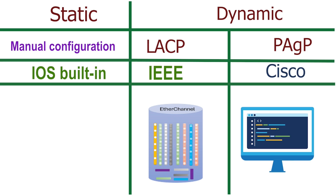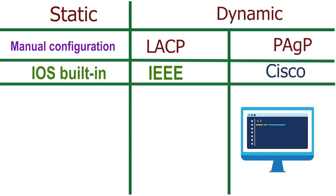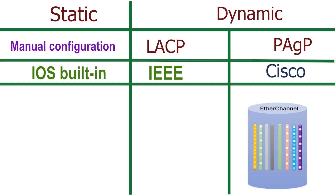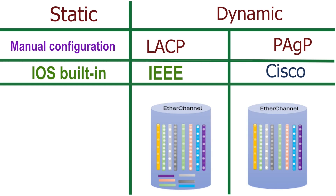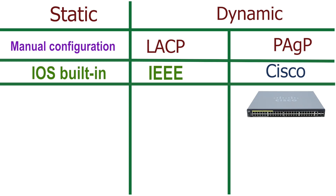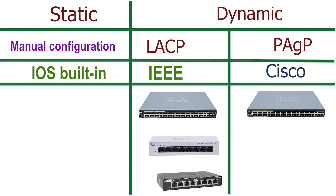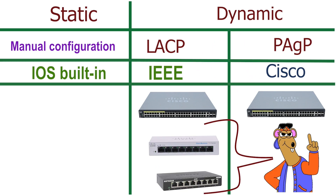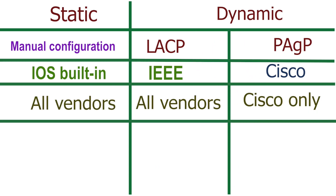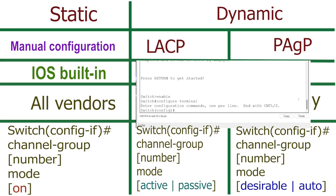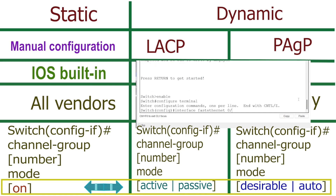Cisco developed PAGP as a proprietary protocol — it works only on Cisco switches and can combine up to 8 links. It works similarly to LACP but uses different terms for its modes. Cisco switches support both protocols, so you can use either one on Cisco switches. However, you cannot use PAGP on non-Cisco switches. On Cisco switches, all methods use the same interface configuration command, but use different configuration options to form the EtherChannel.